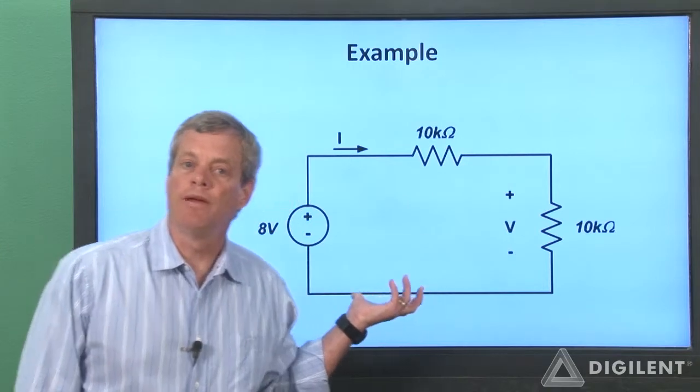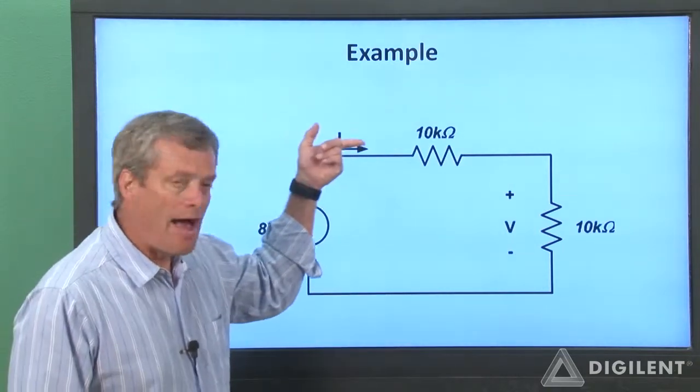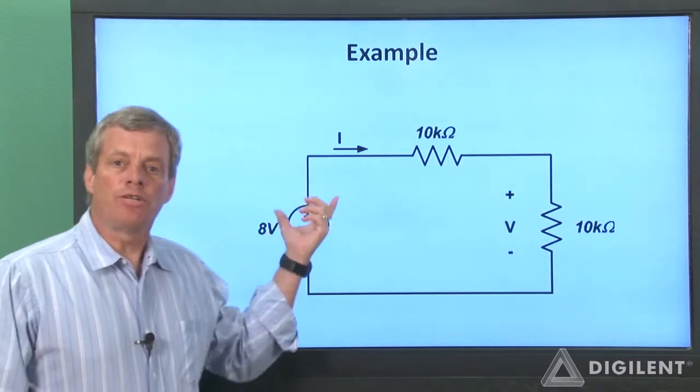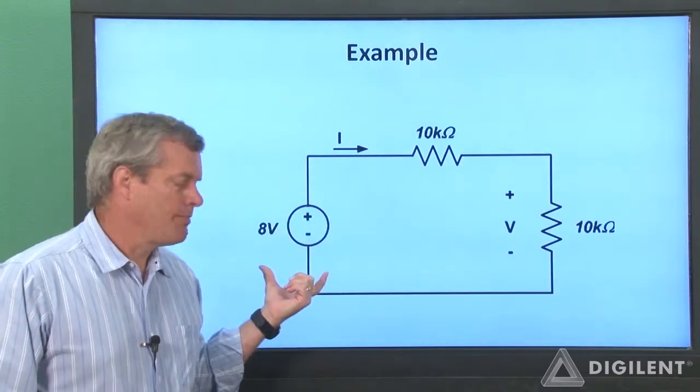Here's a schematic of the circuit we want to implement. We're going to measure the current out of the voltage source and the voltage across this 10 kiloohm resistor. For this circuit, let's first figure out how to implement our source.